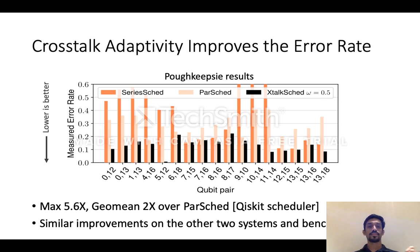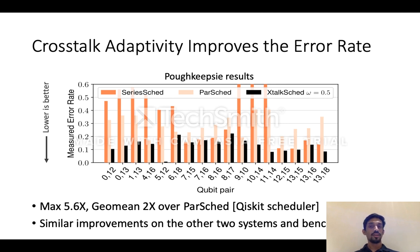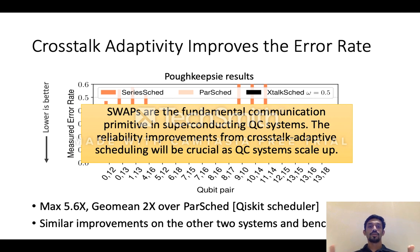Across the different qubit pairs, XtalkSched obtains up to 5.6x reduction in the error rate compared to these baselines. On average, we get about 2x improvement. A 5x improvement in error rate is actually very significant — it means the difference between a failed execution and a successful execution, especially with the current error rates in these systems. We also get similar improvements on other machines and other benchmarks, and we show in the paper that the mitigation our algorithm provides is near-optimal in practice. Most importantly, since swaps are the fundamental communication primitive in superconducting systems, these improvements are very significant, and crosstalk-adaptive scheduling will be very crucial for reliable executions on these systems, especially as they scale up.